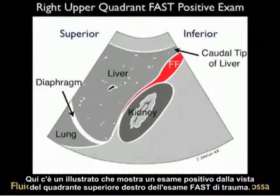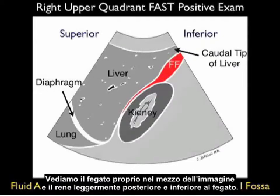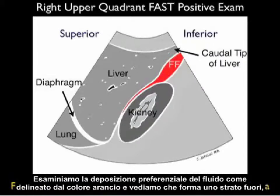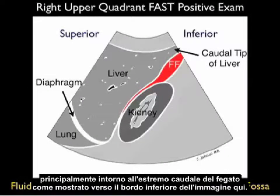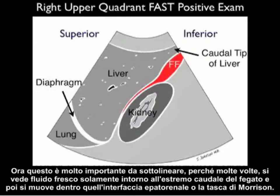Here's an illustration showing a positive examination from the Right Upper Quadrant View of the Trauma Fast Exam. We see the liver in the middle of the image and the kidney slightly posterior and inferior. Looking at the preferential deposition of fluid shown in orange, it layers out predominantly around the caudal tip of the liver towards the inferior edge. Notice it flows from the caudal tip into Morrison's pouch, in between the liver and the kidney. This is very important to emphasize — fresh fluid can initially only be seen around that caudal tip before moving into the hepatorenal interface.